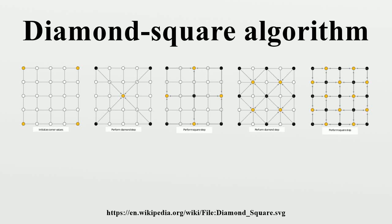The diamond-square algorithm is a method for generating height maps for computer graphics. It is a slightly better algorithm than the three-dimensional implementation of the midpoint displacement algorithm, which produces two-dimensional landscapes. It is also known as the random midpoint displacement fractal, the cloud fractal, or the plasma fractal, because of the plasma effect produced when applied.